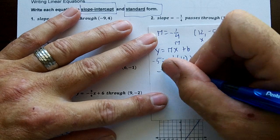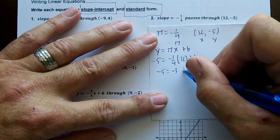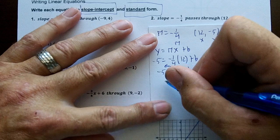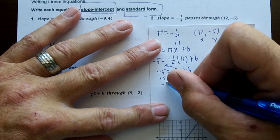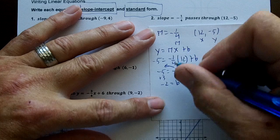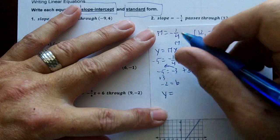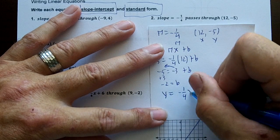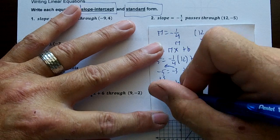So negative 1 fourth of 12 is negative 3, and then move over the 3, so I'm going to get negative 2 equals b. So I know that y equals negative 1 over 4x minus 2 is my slope intercept.